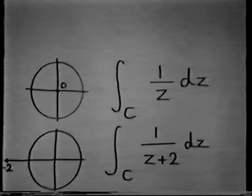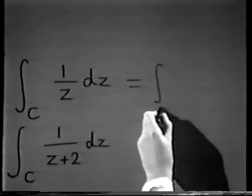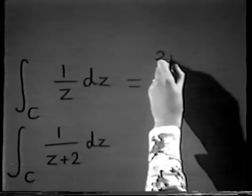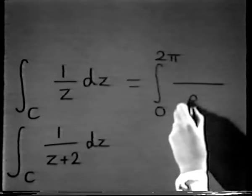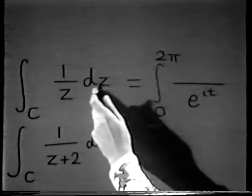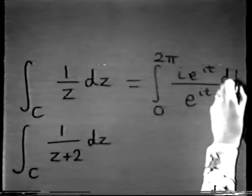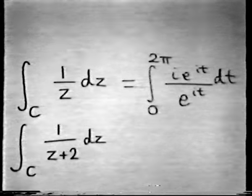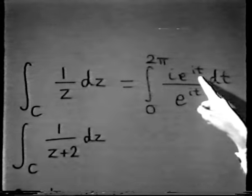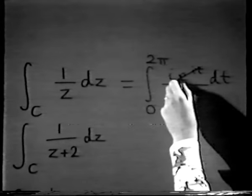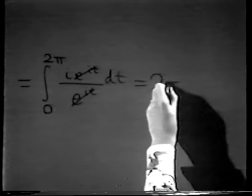How do we actually evaluate this integral? We just plug in the parametrization. We get the integral from 0 to 2π, with z = e^(it) on the bottom, and dz becomes ie^(it)dt. This particular example is very simple: we've got an e^(it) on top and e^(it) on the bottom, so they cancel, leaving just i integrated from 0 to 2π, which gives 2πi.